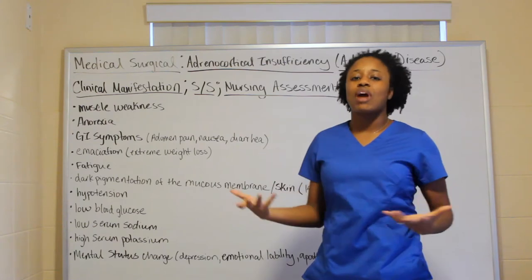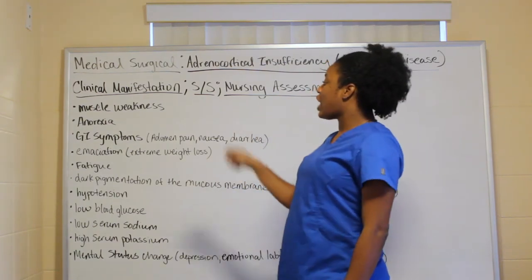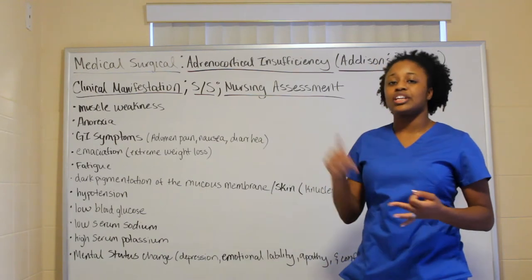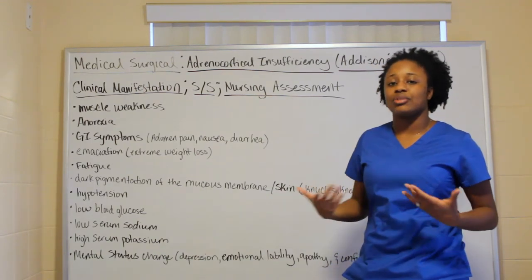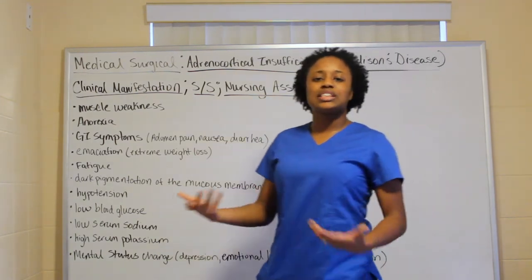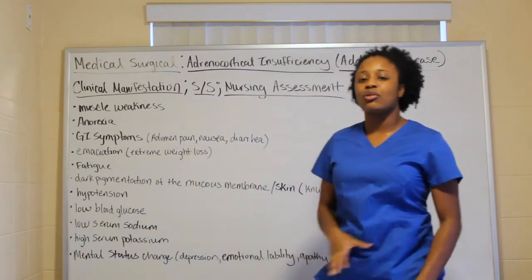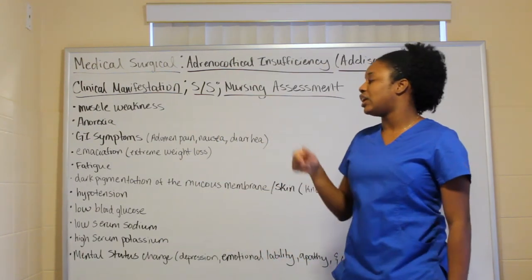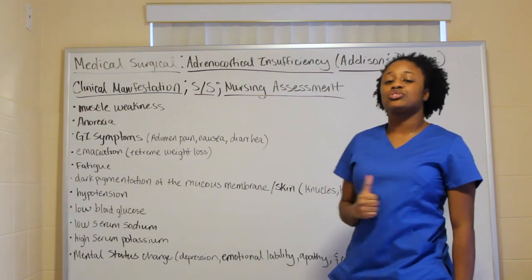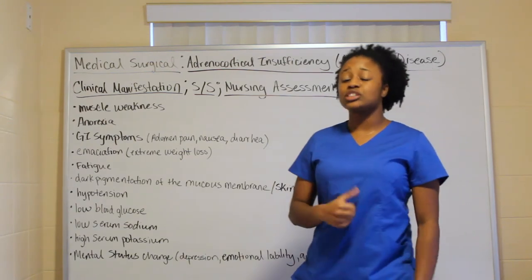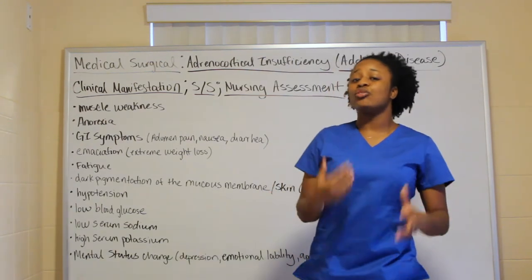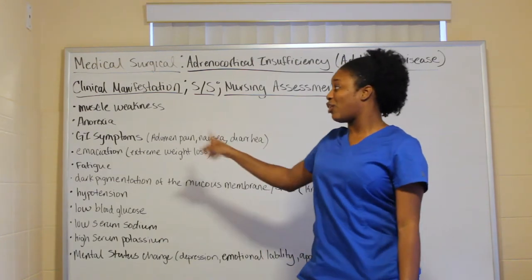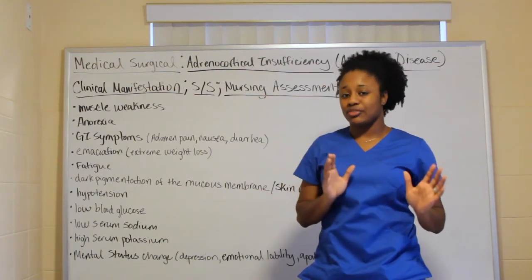With Addison's disease you have anorexia — poor appetite. You also have GI symptoms including abdominal pain, nausea, and diarrhea. There is also emaciation, which is extreme weight loss, whereas in Cushing's you're going to have weight gain — that's already one clear difference.